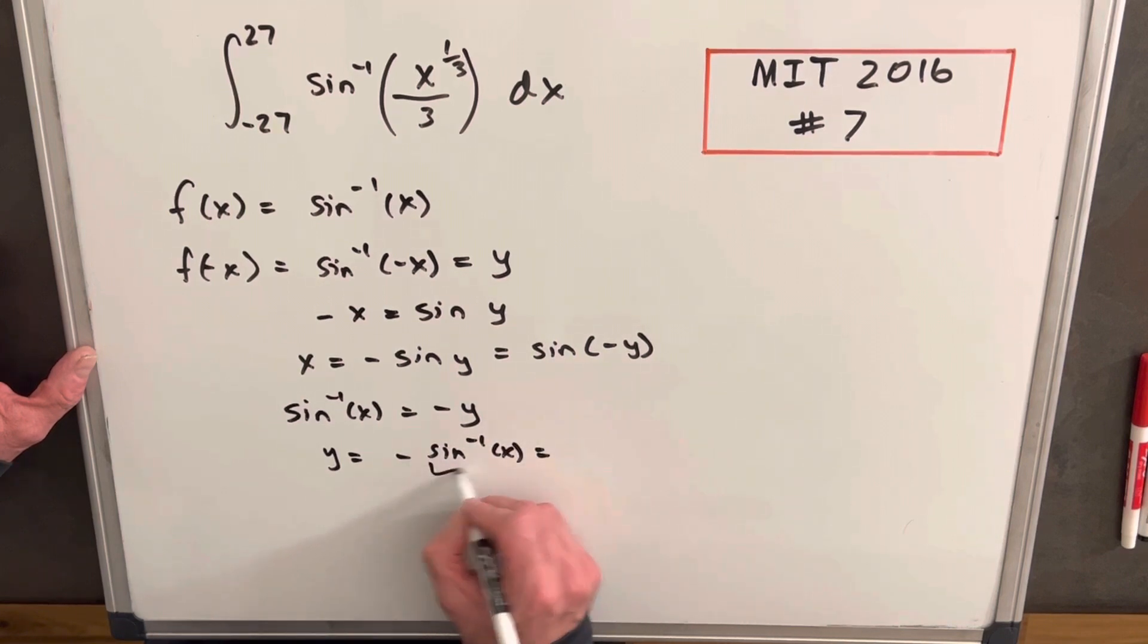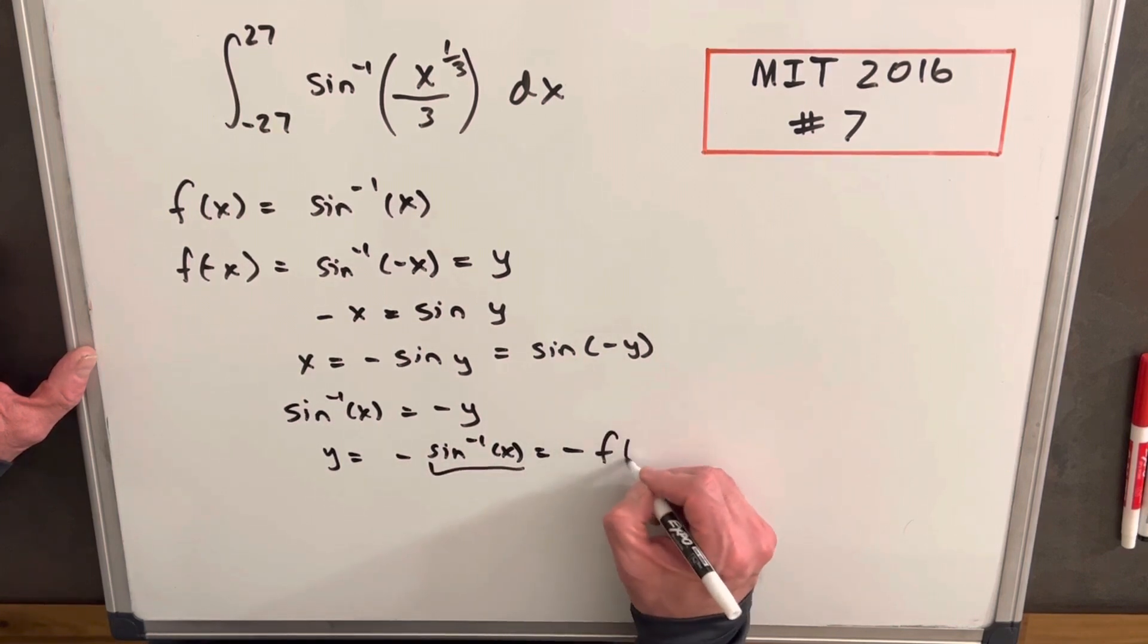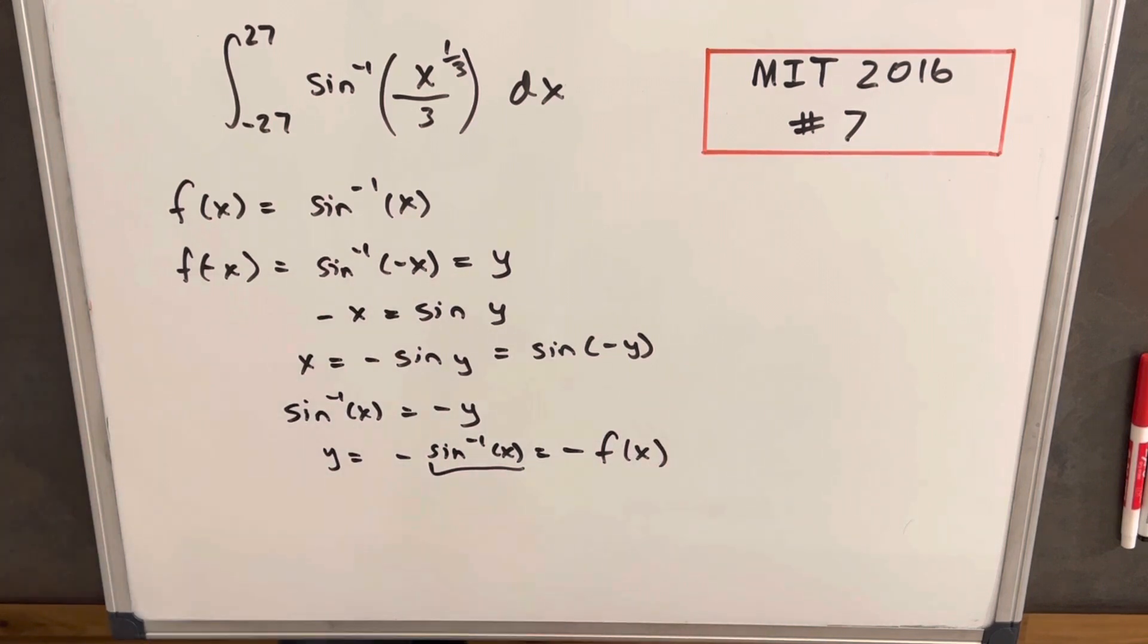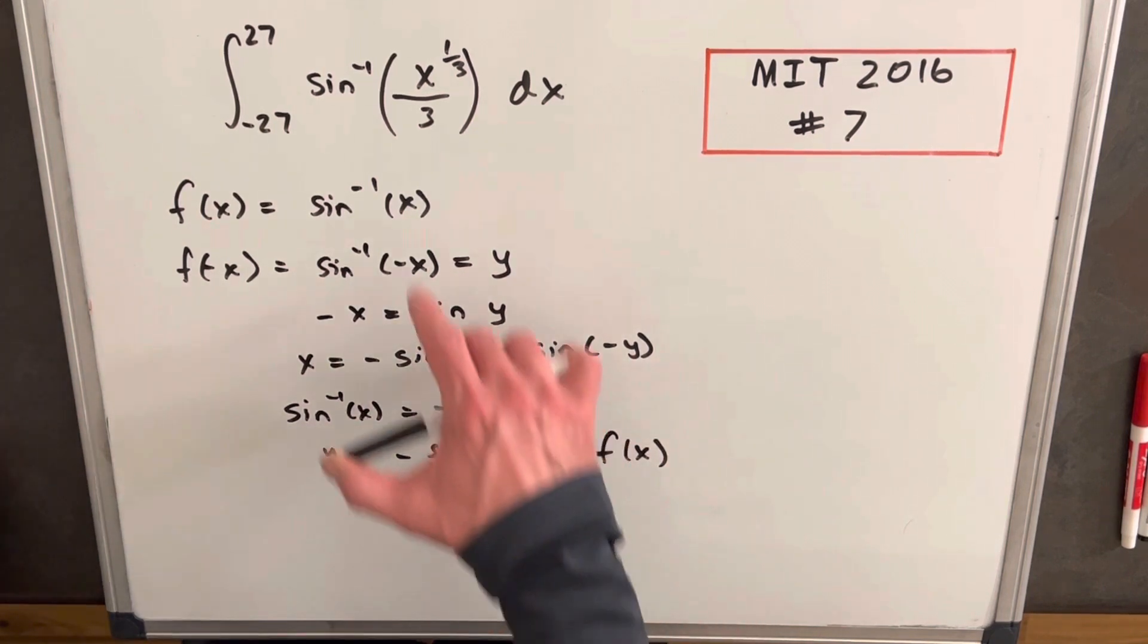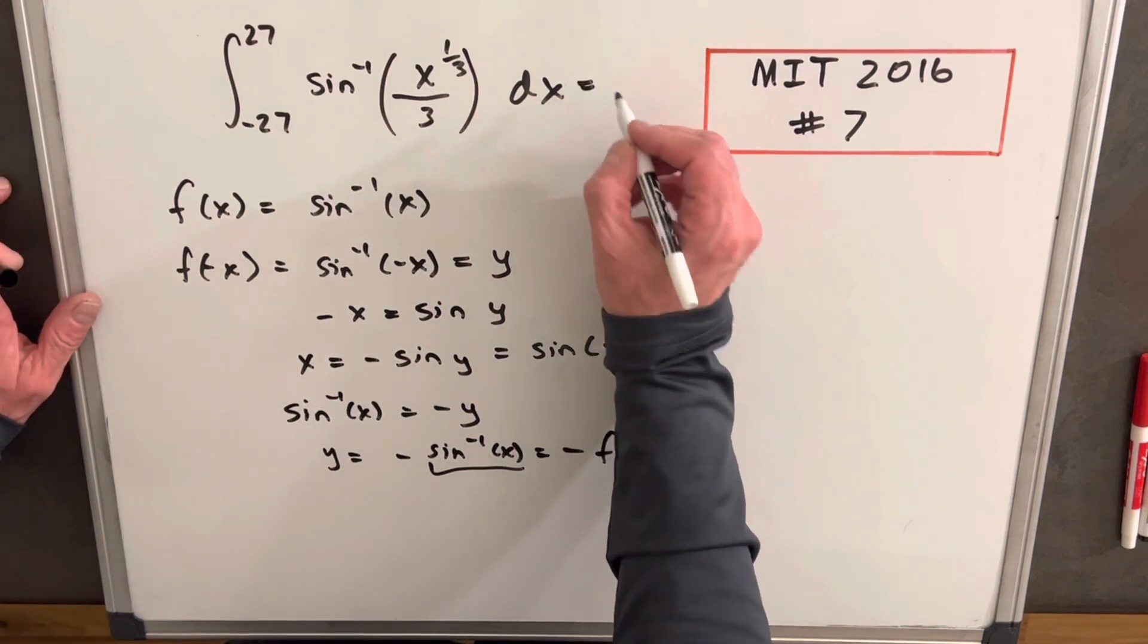And then again multiplying by minus 1, we get y equals minus sine inverse of x. But this here is our function, so we're just back to minus f of x, and so that tells us that this is odd.